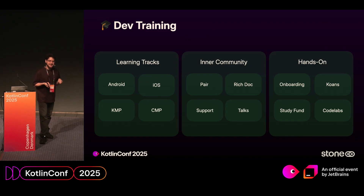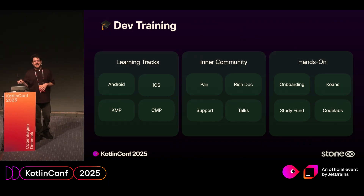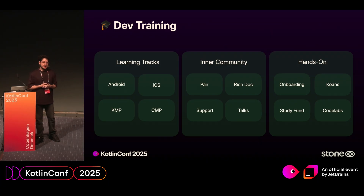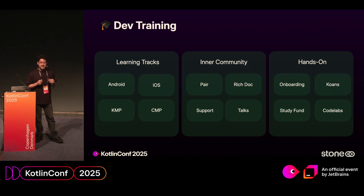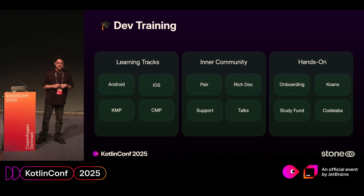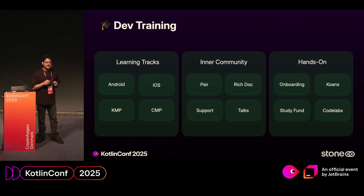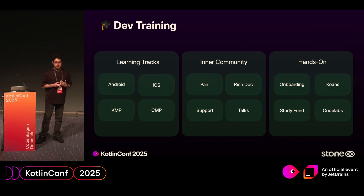You might be wondering how we trained all these developers to adopt KMP. Our approach was not to dictate how they would organize themselves — who does the Kotlin code, who does the other parts. Rather, we invested in training and facilitating people to learn more. We have three main pillars: learning tracks with Confluence pages, classes, books, videos, and lots of Kotlin code walkthroughs; a very strong inner community with pair programming, rich documentation, support, and inner talks; and a hands-on approach where developers build their own projects, especially when new developers join. We also have a study fund where the company offers budget for developers to buy classes and learn more about KMP and CMP.